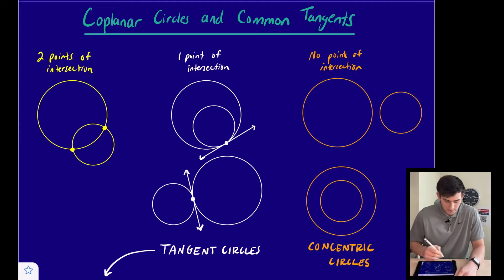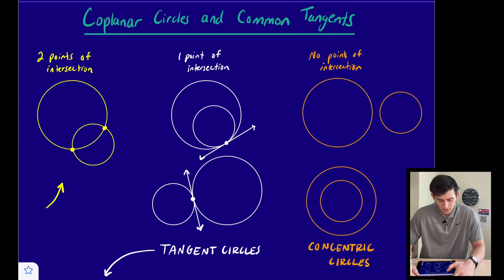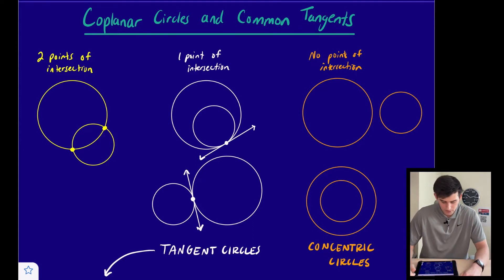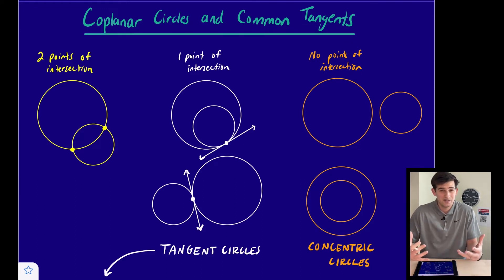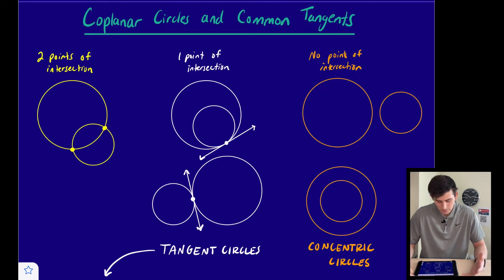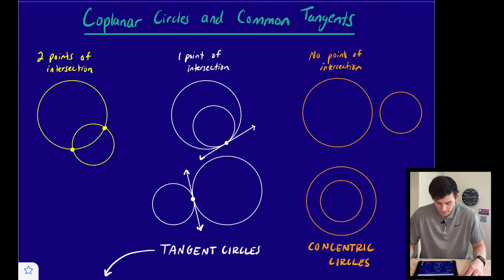The first way, we can see on the left side of our screen: we could have two points of intersection. That's where our two circles would almost look like a Venn diagram, where we have two intersection points.